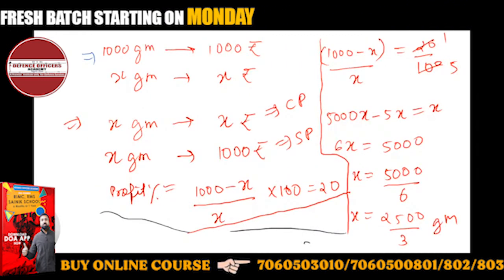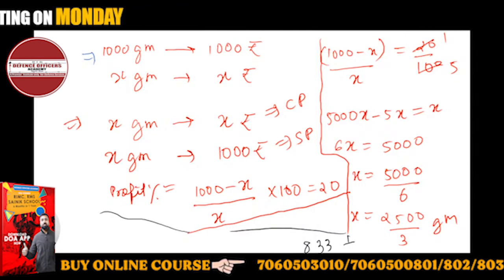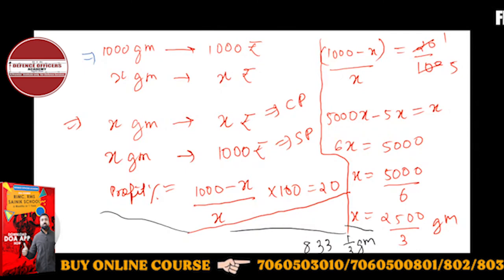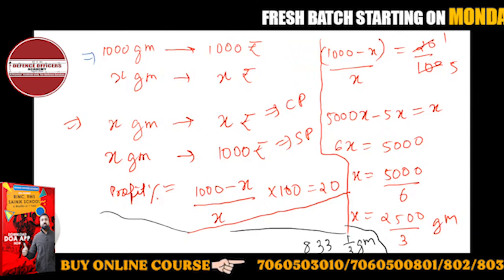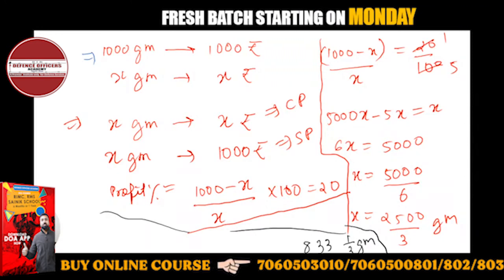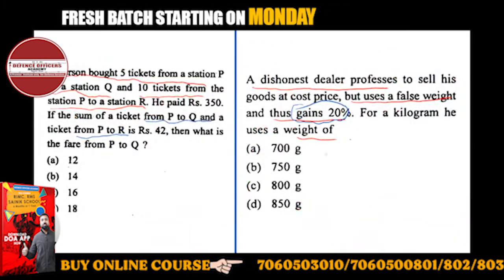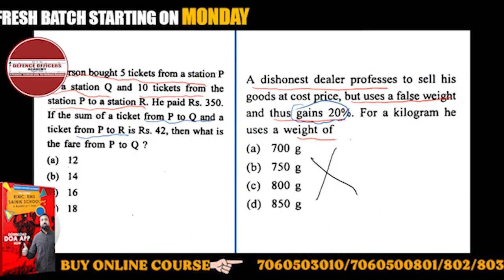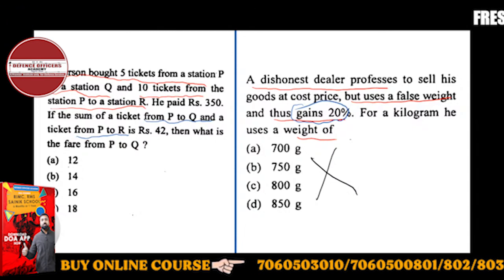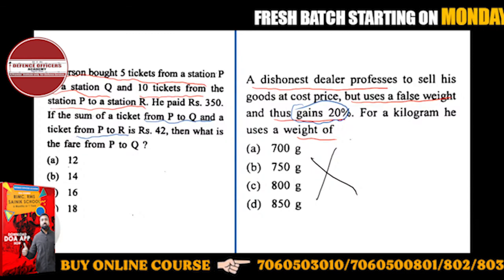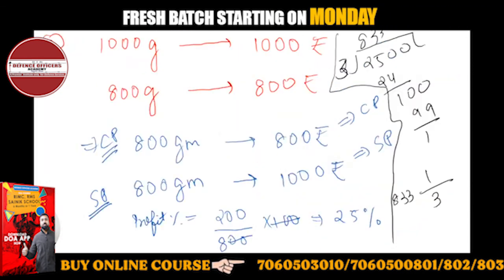So 833⅓ grams is the right answer. When you use 833⅓ grams in place of 1 kg, it gives 20% profit. So the options given in this question are wrong — you should not go by the options. The correct answer is 833⅓ grams.